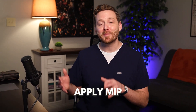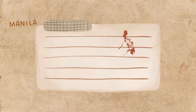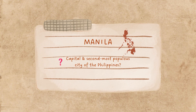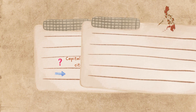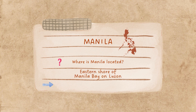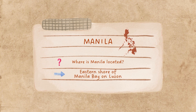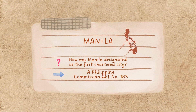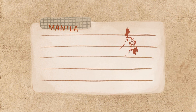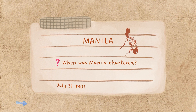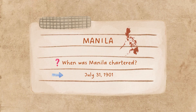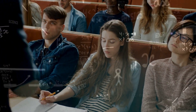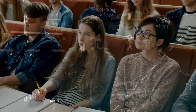Now let's apply the minimum information principle. Question: What's the capital and second most populous city of the Philippines? Answer: Manila. Question: Where is Manila located? Answer: Eastern shore of Manila Bay on Luzon. Question: How is Manila designated as the first chartered city? Answer: The Philippine Commission Act number 183. Question: When was Manila chartered? Answer: July 31, 1901. Here, we've distilled the information into four concise segments, enabling swifter and sharper recall. Given the constant influx of new material students face, efficiency becomes paramount.